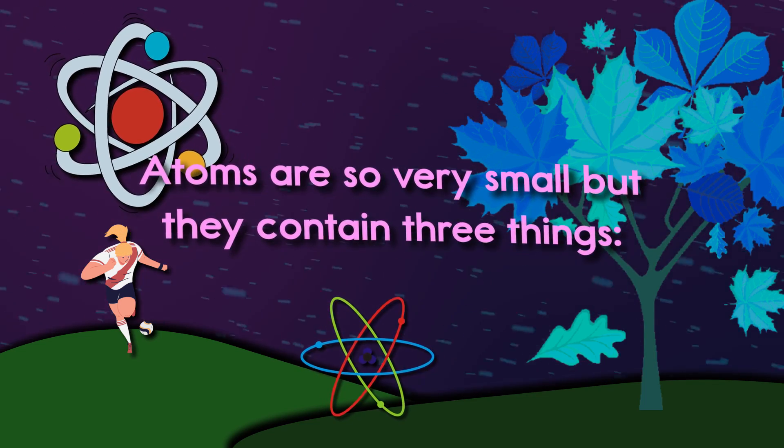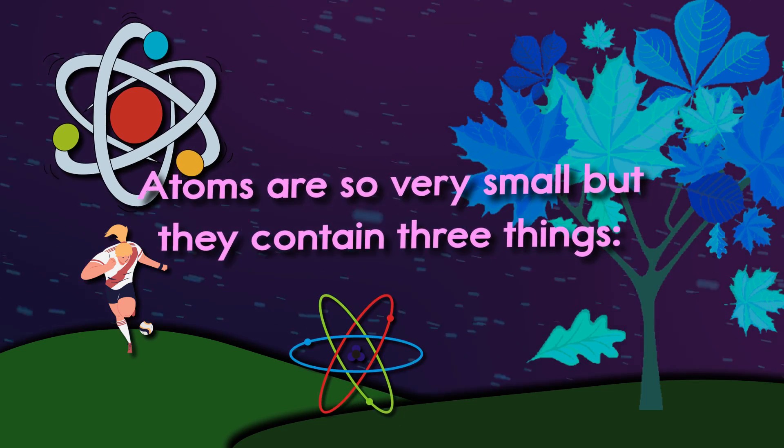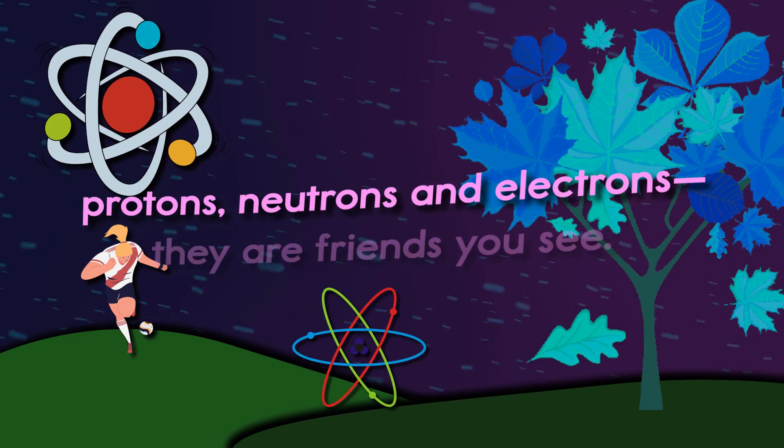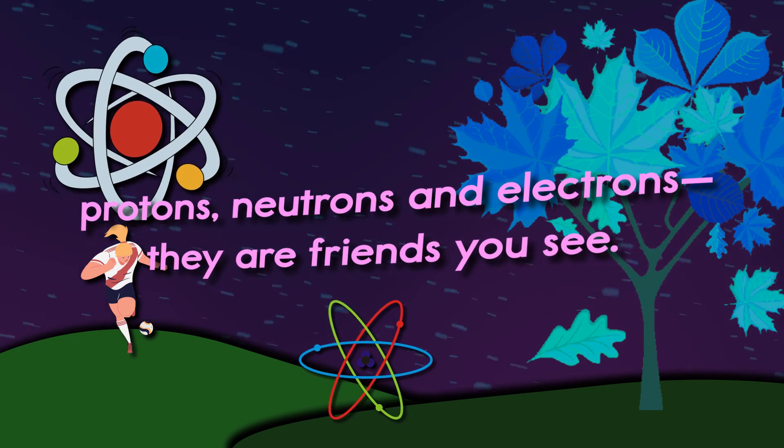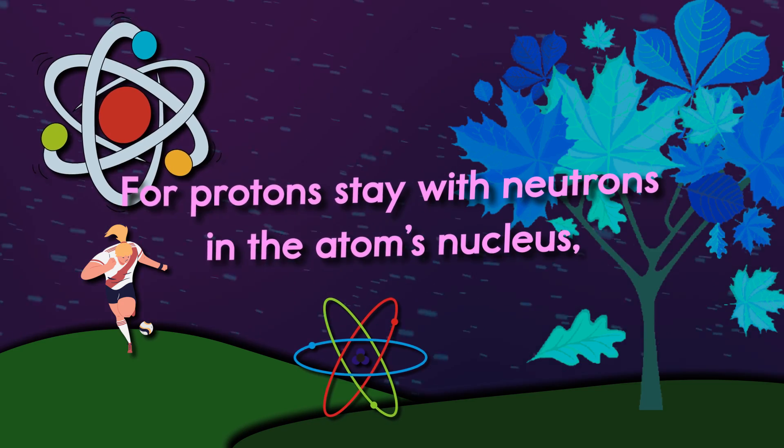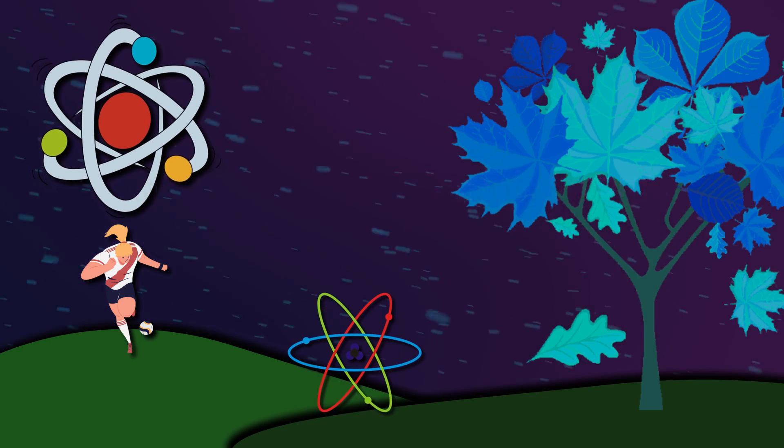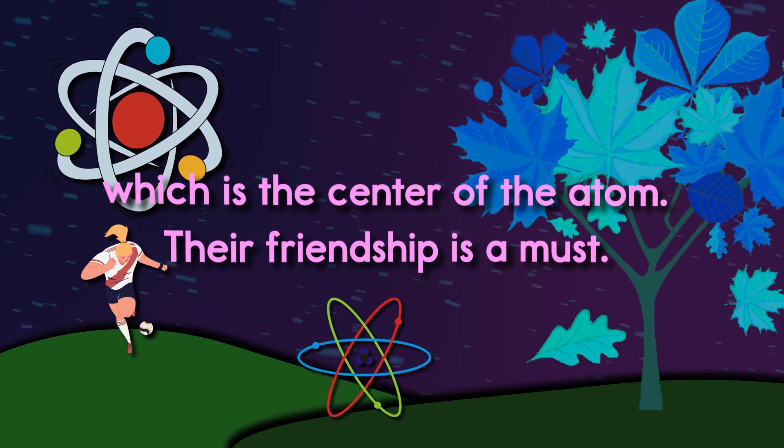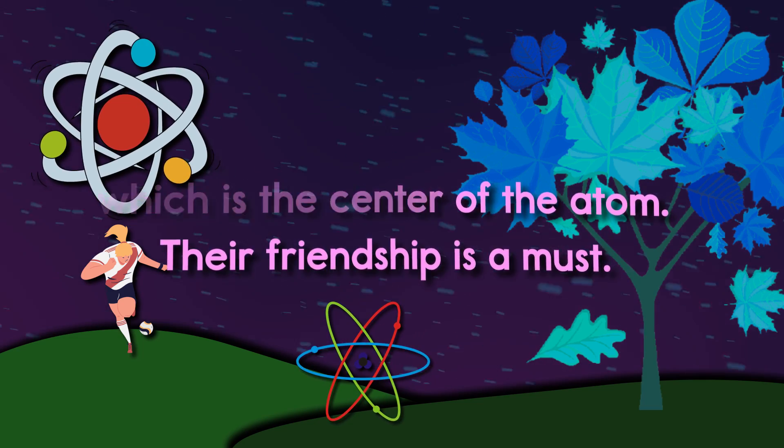Atoms are so very small, but they contain three things: protons, neutrons, and electrons. They are friends, you see. For protons stay with neutrons in the atom's nucleus, which is the center of the atom. Their friendship is a must.